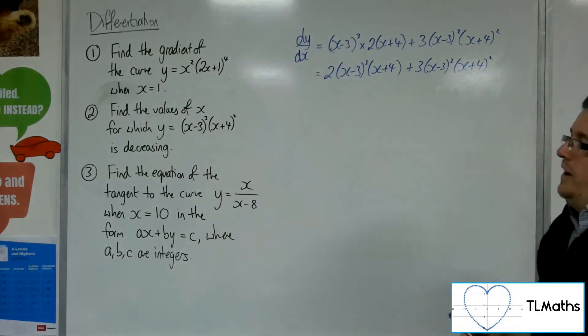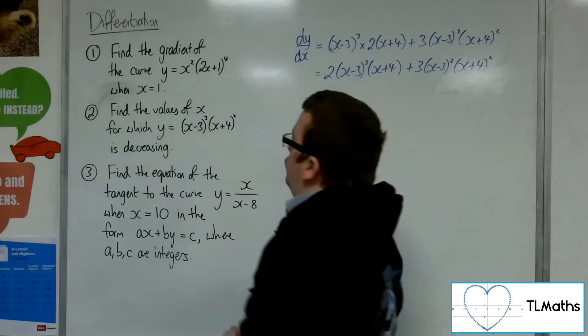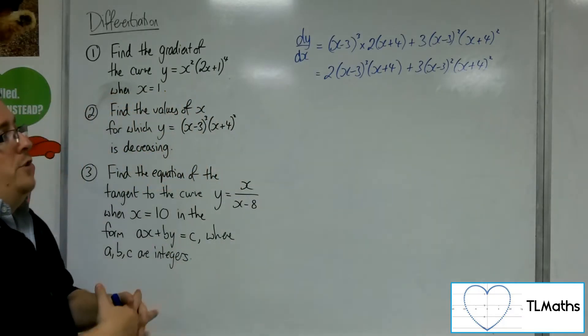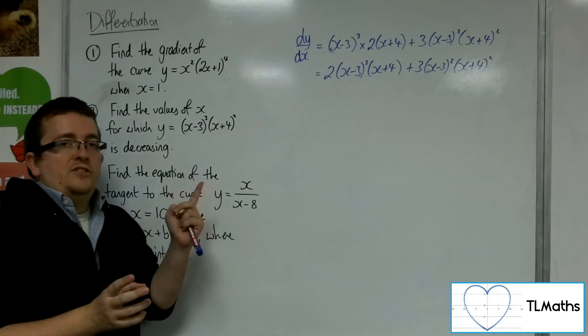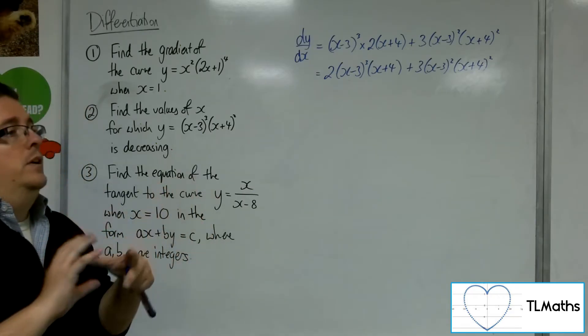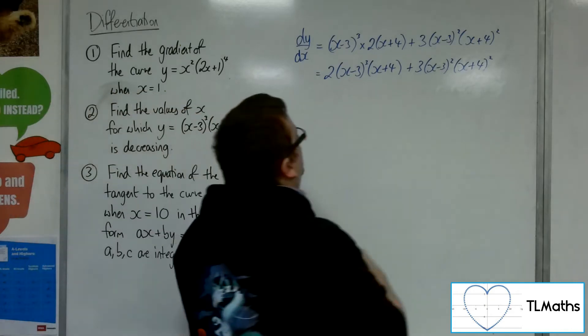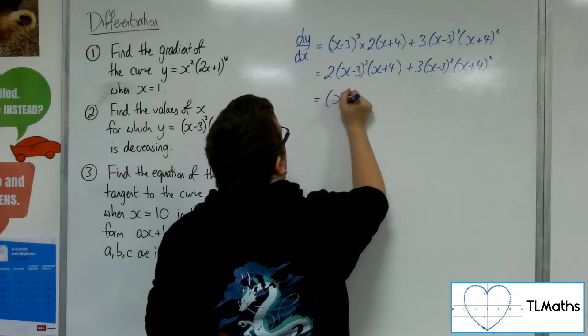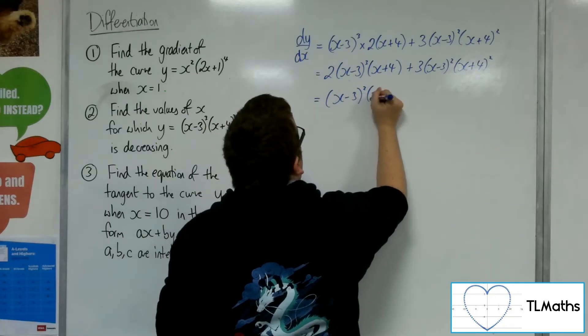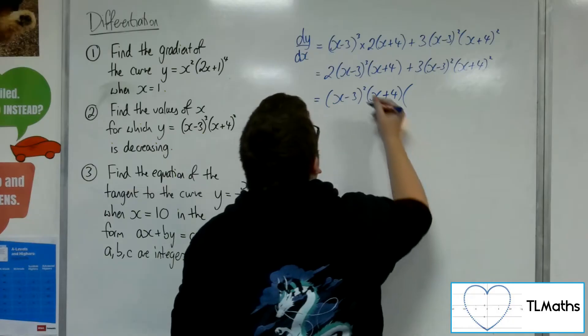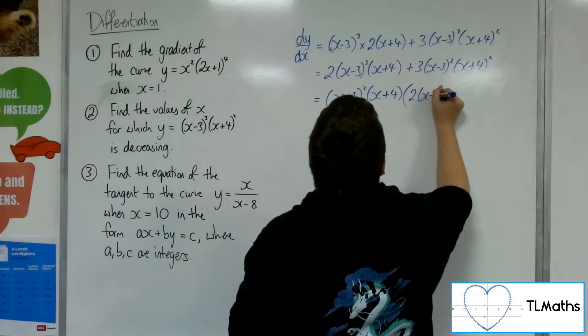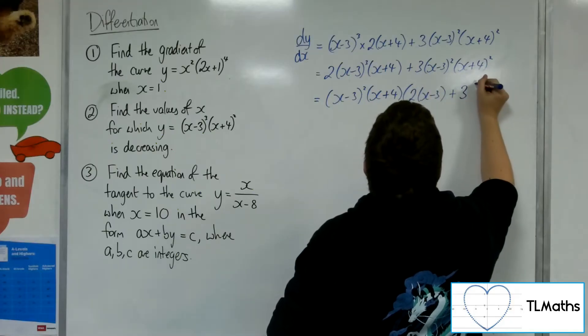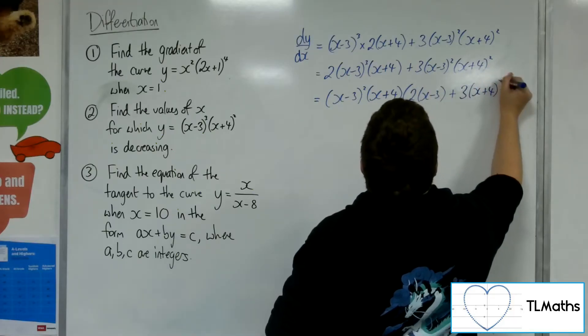So I want to find the values of x for which y is decreasing. So I want to know when dy by dx is less than 0. Now, it's not going to really help me putting this directly less than 0 without thinking about factorising it first. So I'm going to factorise it first. I'm going to pull the x minus 3 squared out and an x plus 4, leaving me with 2 lots of x minus 3, plus 3 lots of an x plus 4.